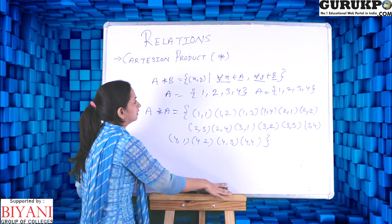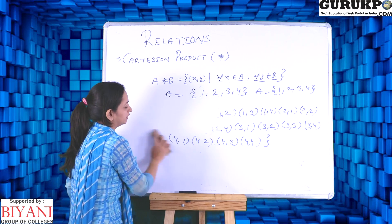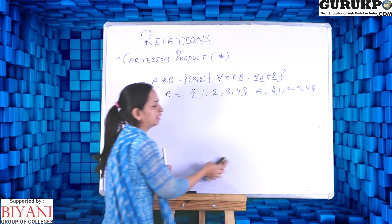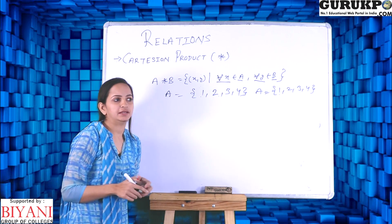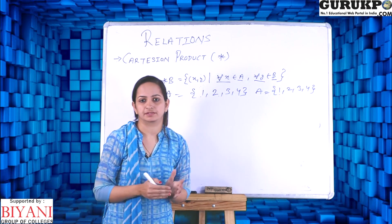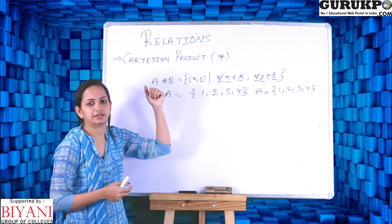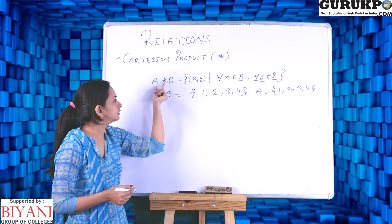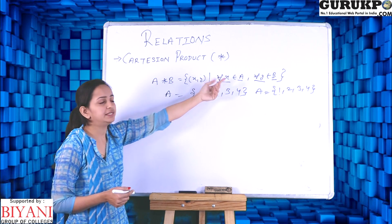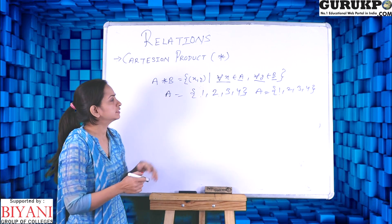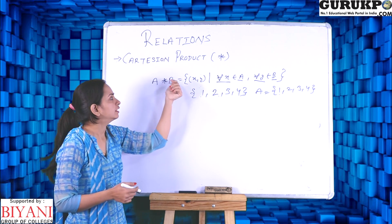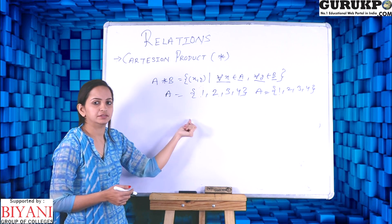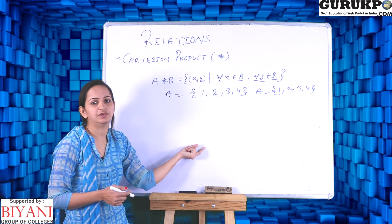Now that we understand Cartesian product, we can move to the topic of relations. Relation is defined as an association between two sets. The set of a relation is a subset of the Cartesian product because it is also an association between each element of two sets. So a relation is a subset of the Cartesian product — we limit some of the elements in the Cartesian product and the resultant set is called our relation.